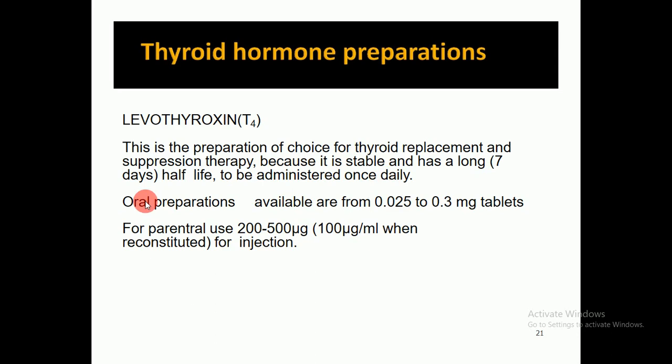Levothyroxine T4 is available as an oral preparation in tablet form from 0.025 to 0.3 milligrams. It is also available in injectable form for parenteral use at 200 to 500 micrograms, or 100 micrograms per mL when reconstituted for injection.